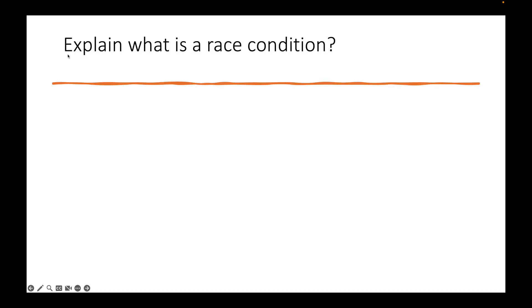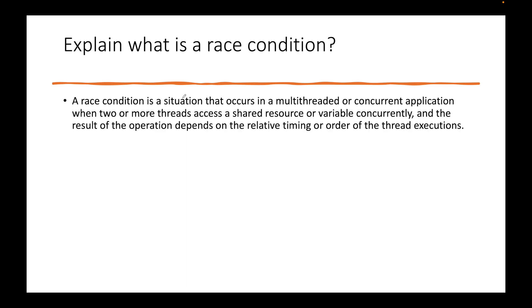Hello everyone, welcome to my channel Code With Ease by Ursha. We are doing Java interview questions on the multi-threading topic. Here is the question: what is a race condition? We'll talk about the types of race condition and also see it via code. First of all, race condition occurs in a multi-threaded environment where there are multiple threads working together to achieve a common objective.